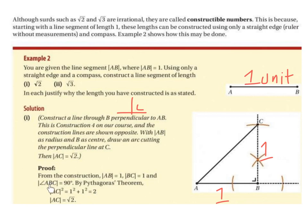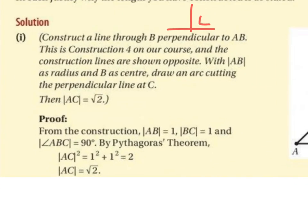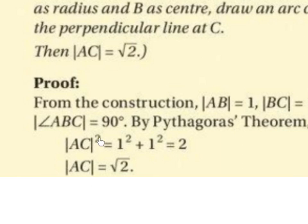The angle ABC is equal to 90 degrees because BC is perpendicular to AB, so this is a right-angle triangle. By Pythagoras' theorem, the hypotenuse squared equals the sum of the other two sides squared. AC is the hypotenuse, so AC² = AB² + BC² = 1² + 1² = 2. Solving for AC: AC = root 2. Therefore the distance from A to C is root 2.